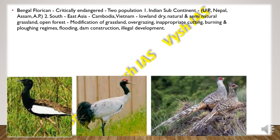Then we have the Bengal Florican, which is critically endangered. There are two populations: one in the Indian subcontinent in UP, Nepal, Assam and Arunachal Pradesh, and one in Southeast Asia in Cambodia and Vietnam. They are mainly found in lowland, dry, natural and semi-natural grasslands and open forests. The main threats are modification of grasslands into agricultural settlements, overgrazing, inappropriate cutting and burning, slash and burn practices, flooding, dam construction and illegal development.